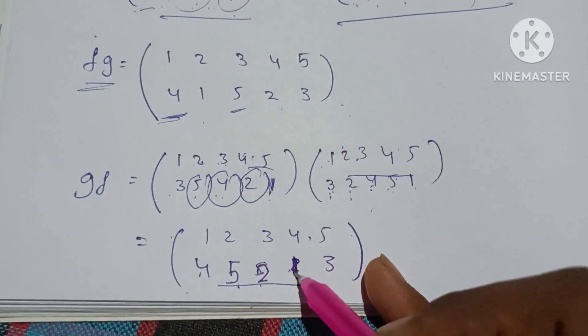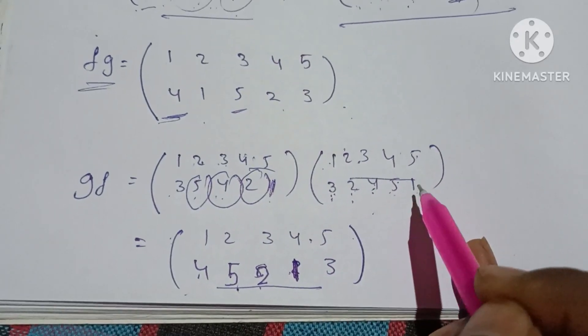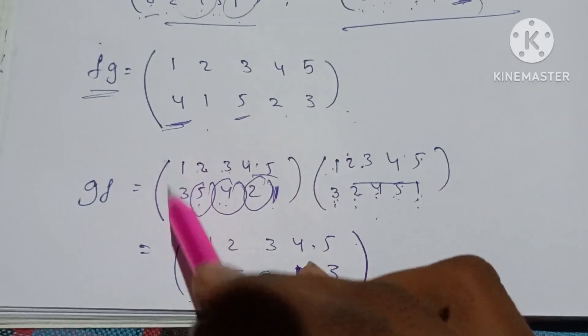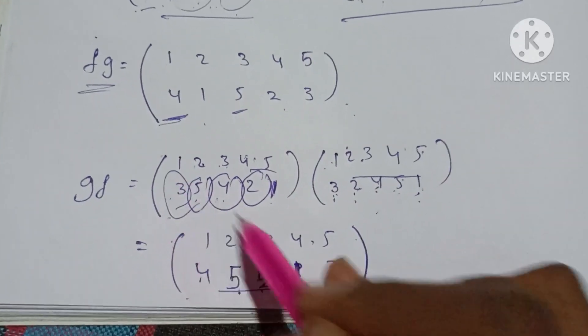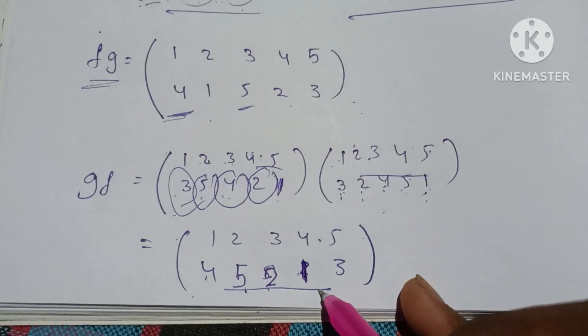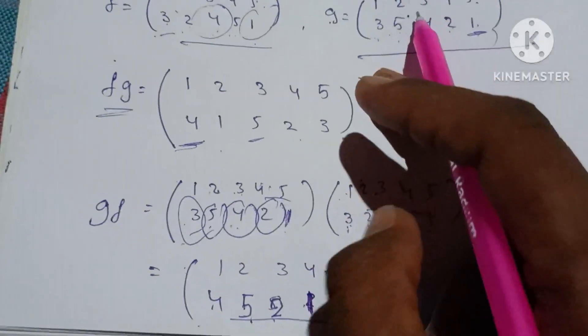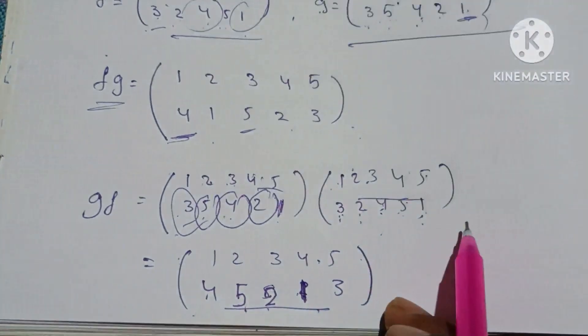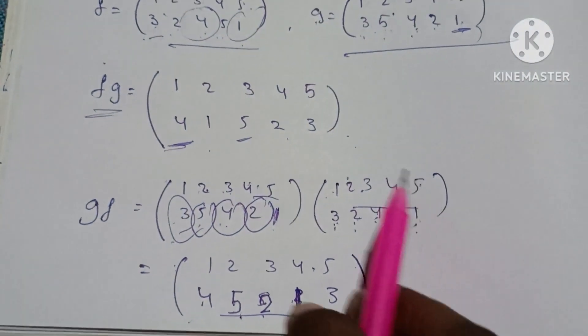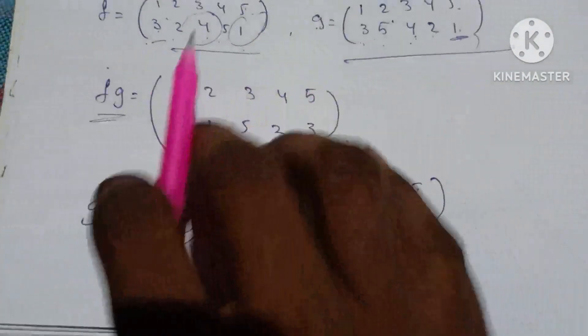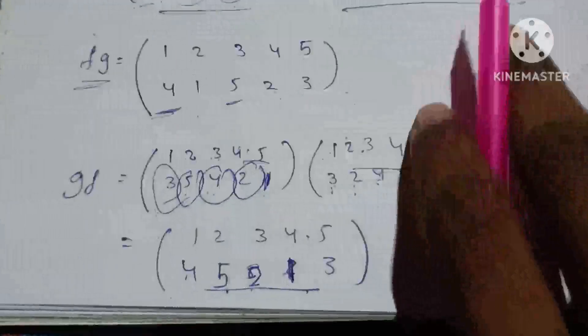So 1 maps to 1. FG can be done with GF — and GF gives us a cyclic permutation. I will show you.